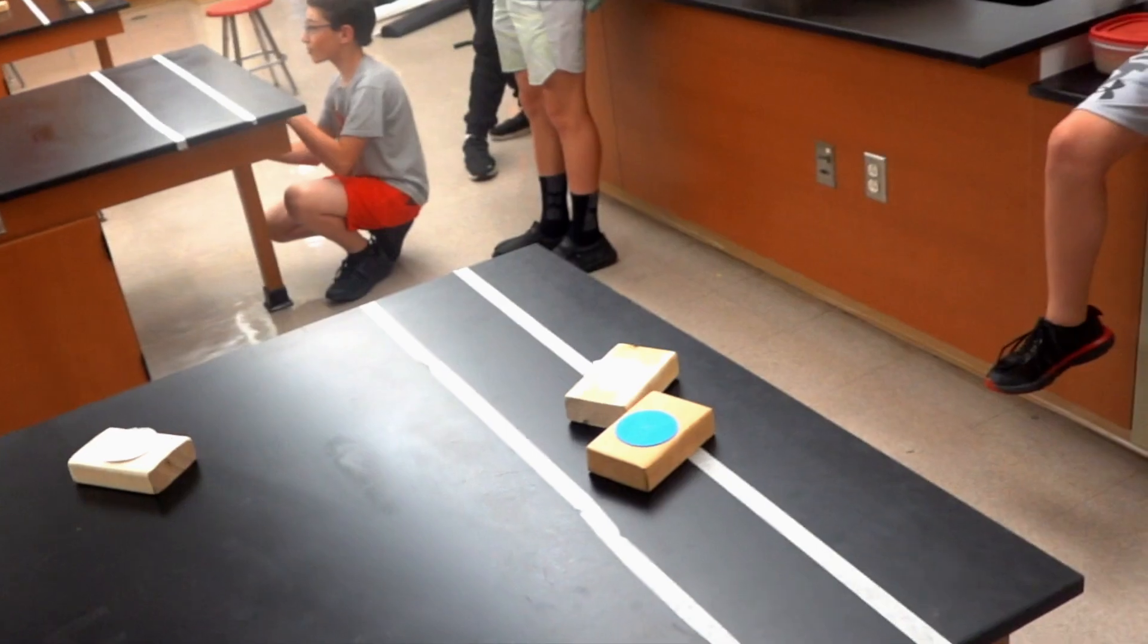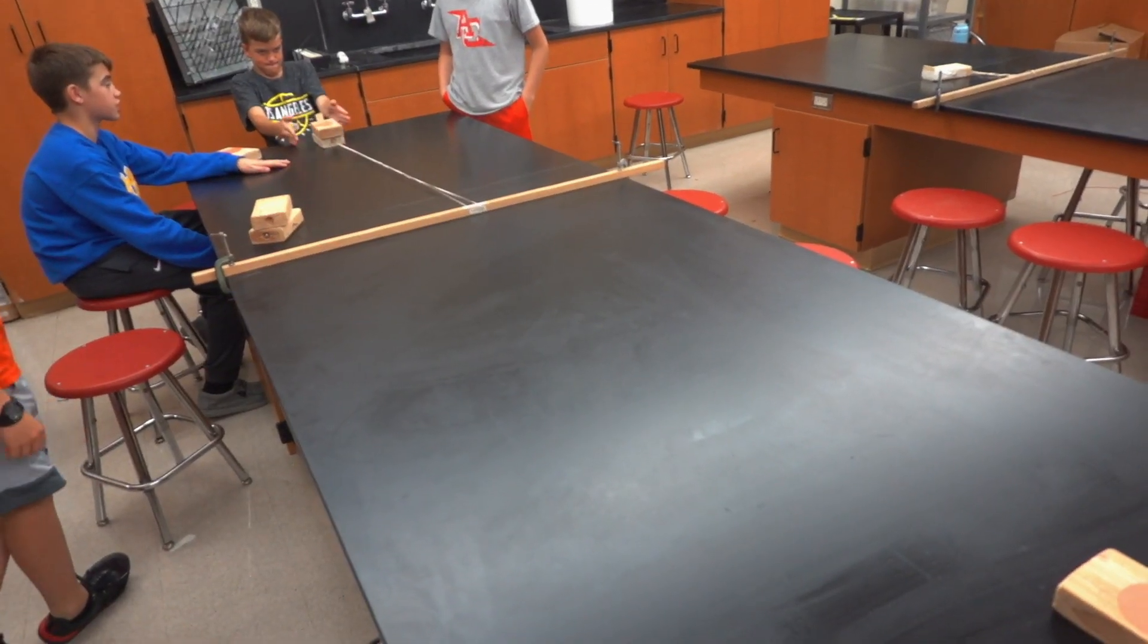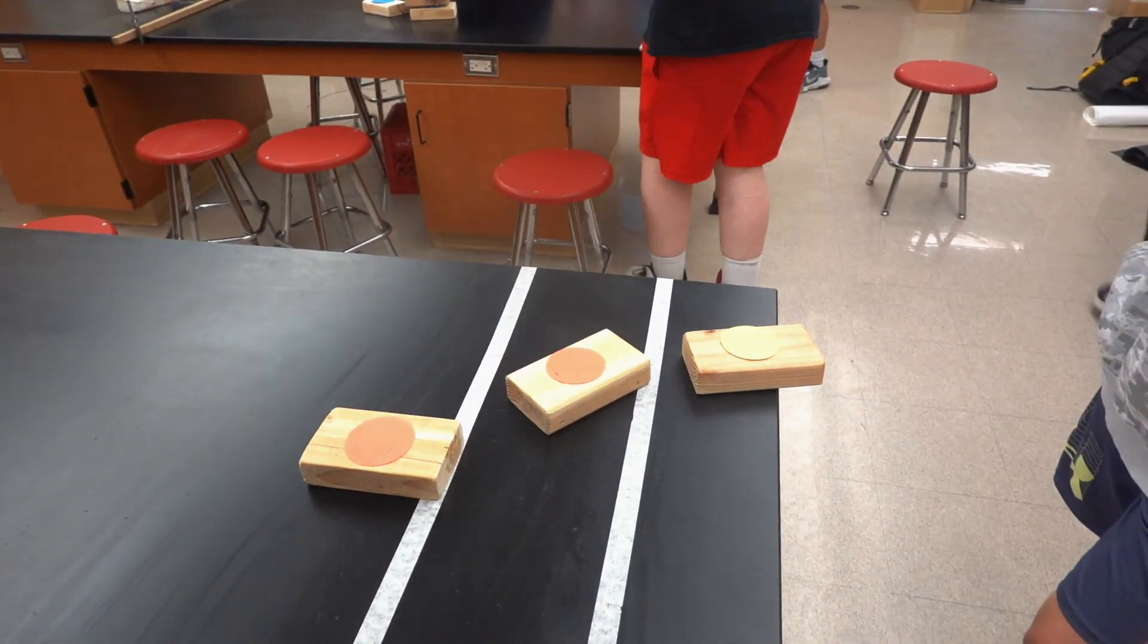This is a game that my students made up. It's called Inertia Shuffleboard. The pucks travel forward in a straight line and they're shot with a rubber band.